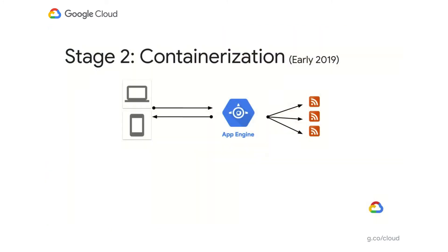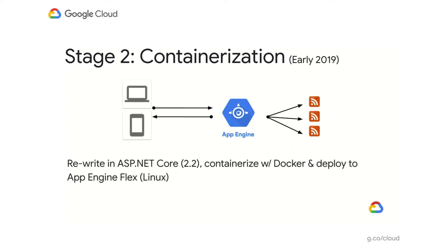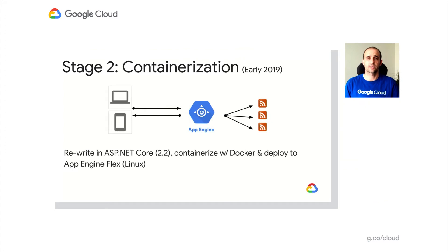Before containerization, we first had to convert our application from .NET to .NET Core. So we rewrote our application as .NET Core 2.2, the latest version at the time, and this took a weekend. We were pleasantly surprised because we were expecting at least a couple of weeks for the conversion. But we had all the libraries that we needed, and everything we were using on .NET was already available on .NET Core. Once we rewrote our application in .NET Core, we freed ourselves from Windows and could run on Linux. That's when we got into containerization.